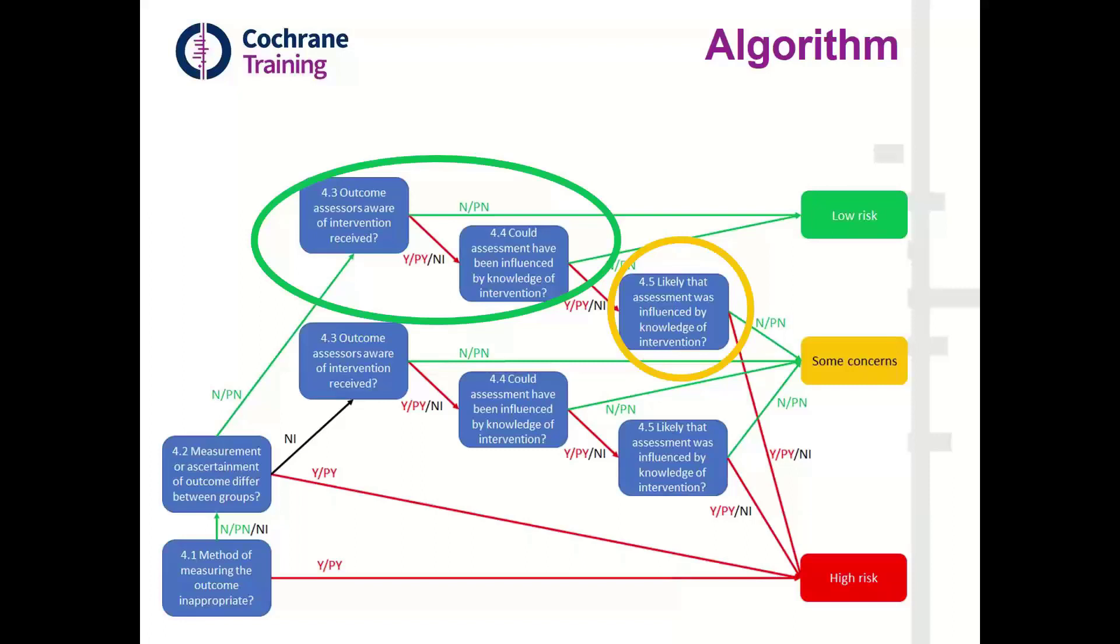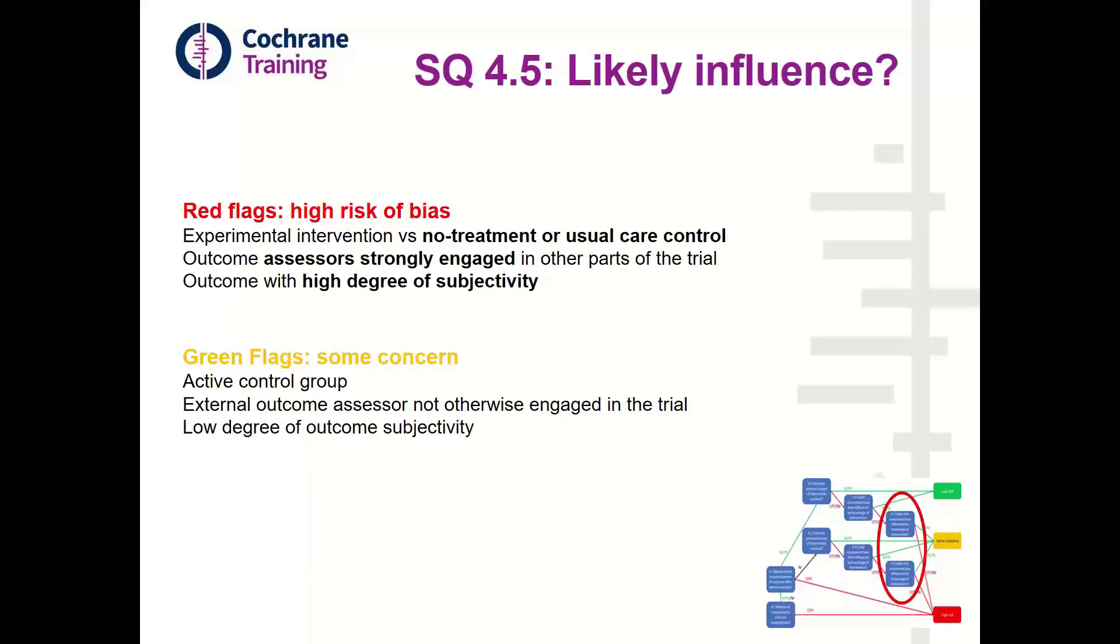Our next question is from Ralph. In the last signaling question, it was mentioned that an active control leads to some concerns. Could you please comment on this issue in more detail? I hope that I said that an active control was not regarded as a problematic issue. The problematic issue is when an experimental intervention is compared to a no treatment or usual care control. If an experimental intervention is compared to another active control group, it's regarded as a green flag, but as it doesn't translate into low risk of bias but some concerns, I colored the green flag yellow here.